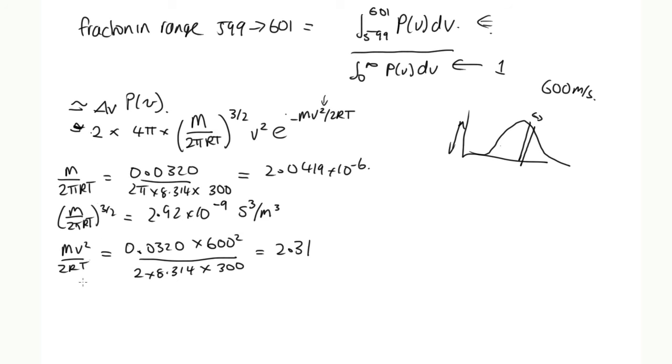So now we can just substitute everything back into this equation. So it is equal to 2 times 4π times this thing, which is the 2.92 times 10 to the minus 9 times v squared, which is 600 squared times e to the minus 2.31. And solving that on the calculator, we get 2.66 times 10 to the minus 3, which is equal to 0.266%.